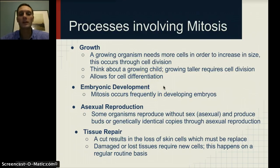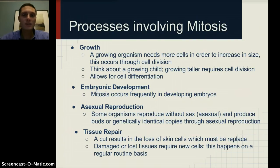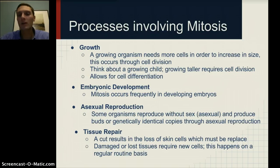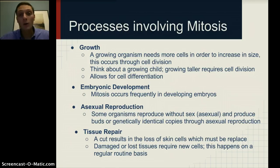Embryonic development is another use — mitosis occurs frequently in a developing embryo. Asexual reproduction is another: some organisms reproduce without sex, and because of that, they are identical genetic copies of one another. This can be advantageous in a stable environment where finding a mate to mix up genes isn't necessary for the organism's survival. Another process involving mitosis is tissue repair — if you get a cut, it results in loss of some skin cells that must be replaced. Mitosis, through cells dividing and growing, allows this to happen.